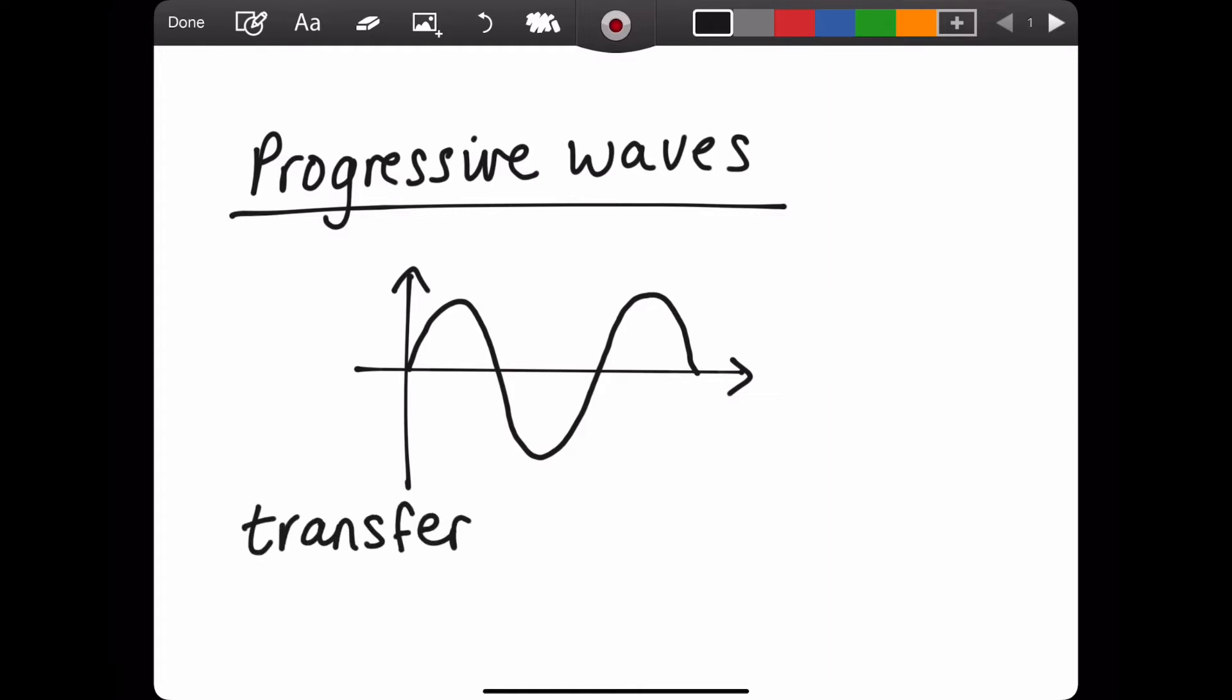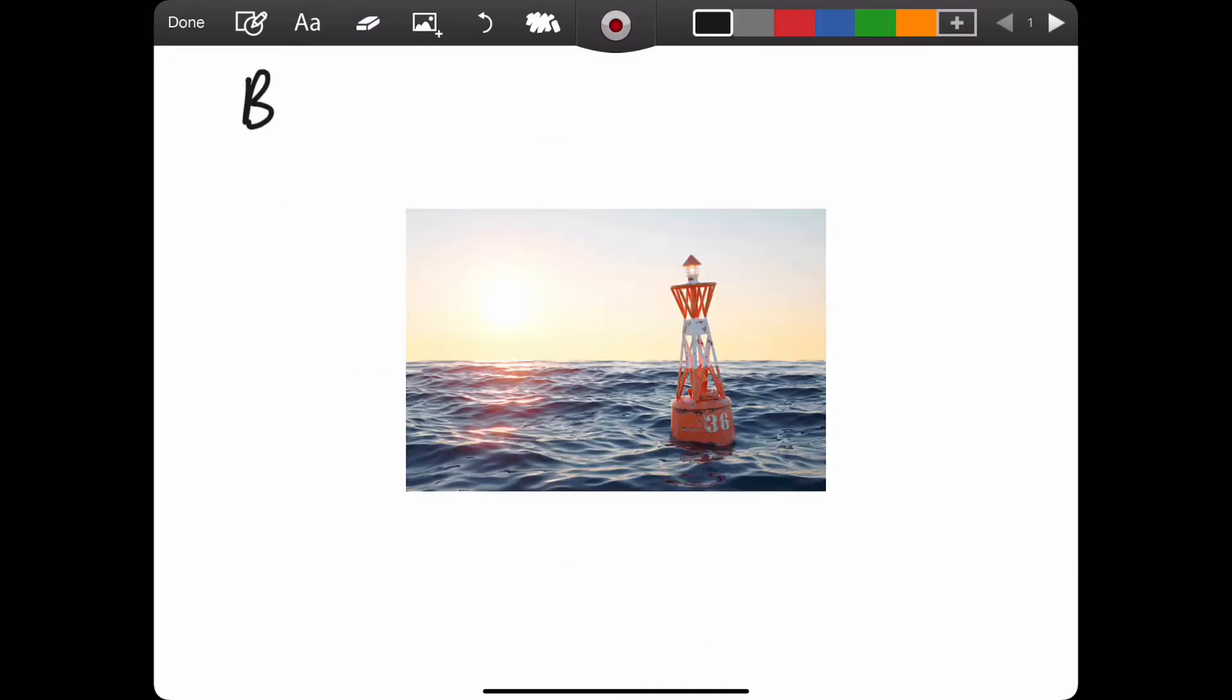But what are progressive waves? You need to know this definition: progressive waves transfer energy or information but they do not transfer matter. It's very important to remember.